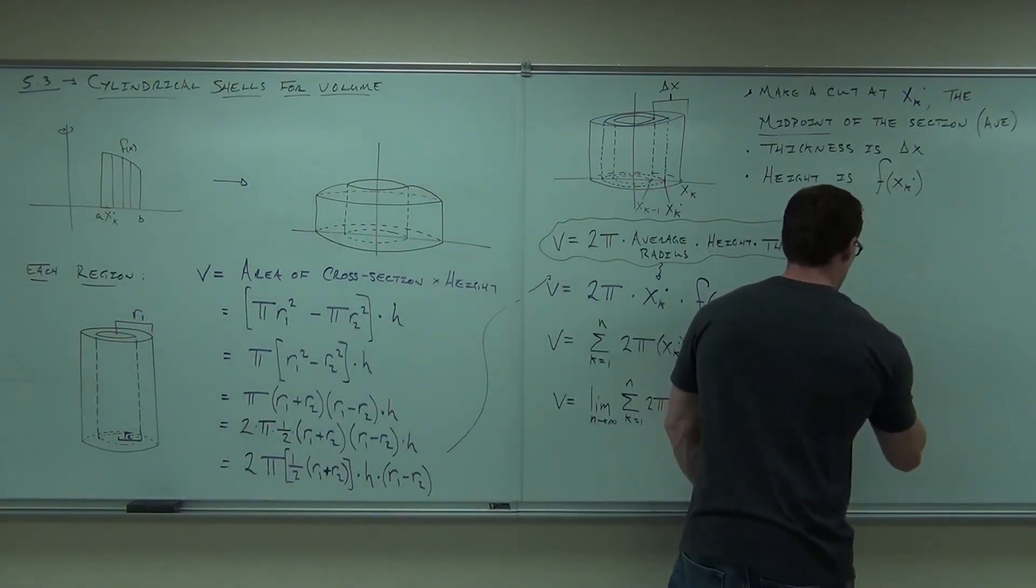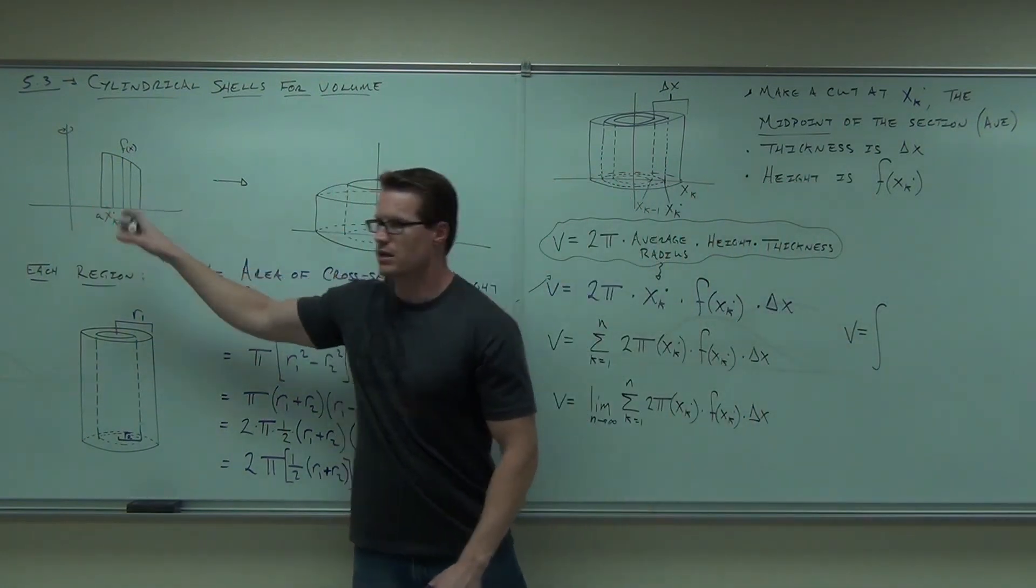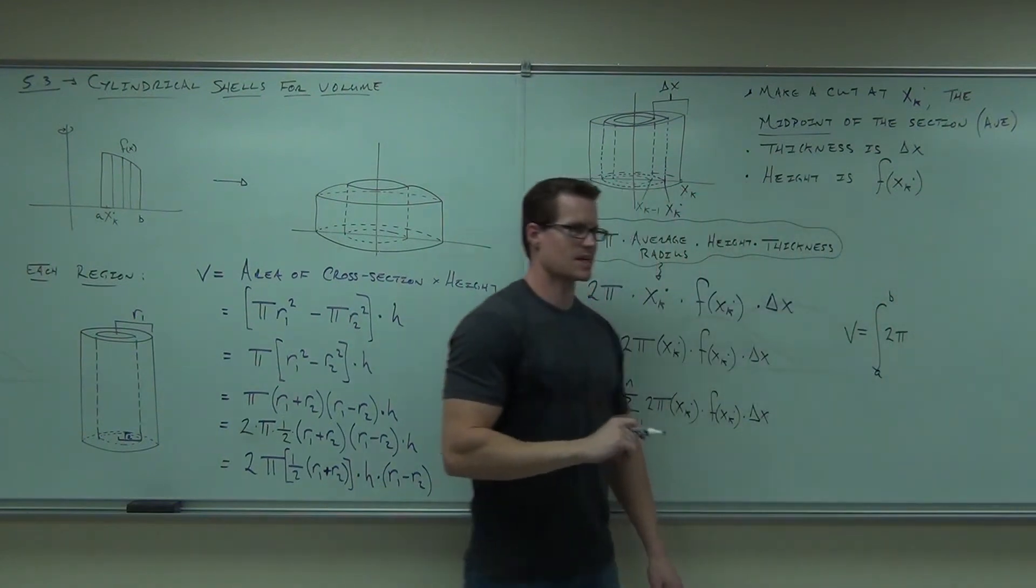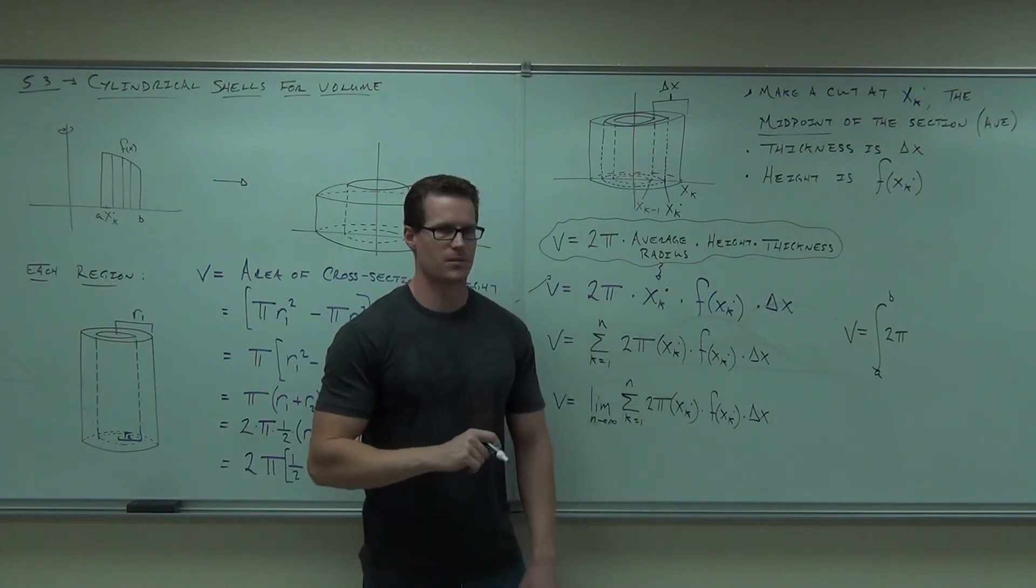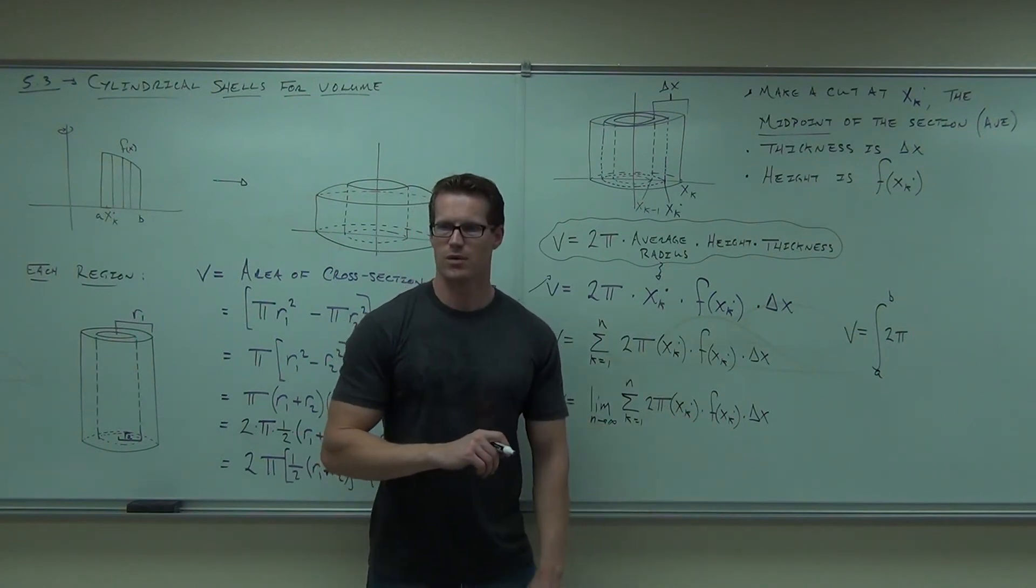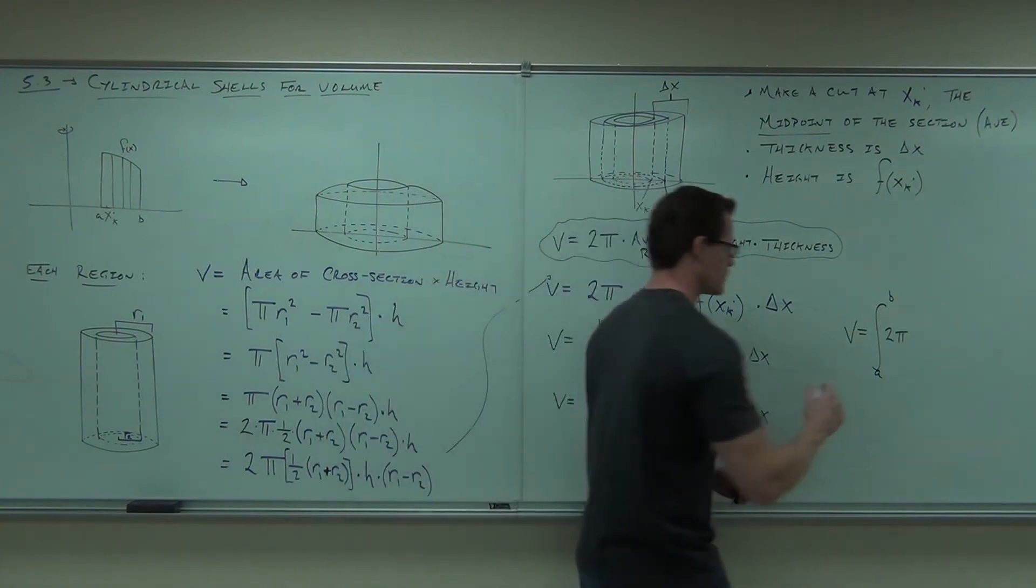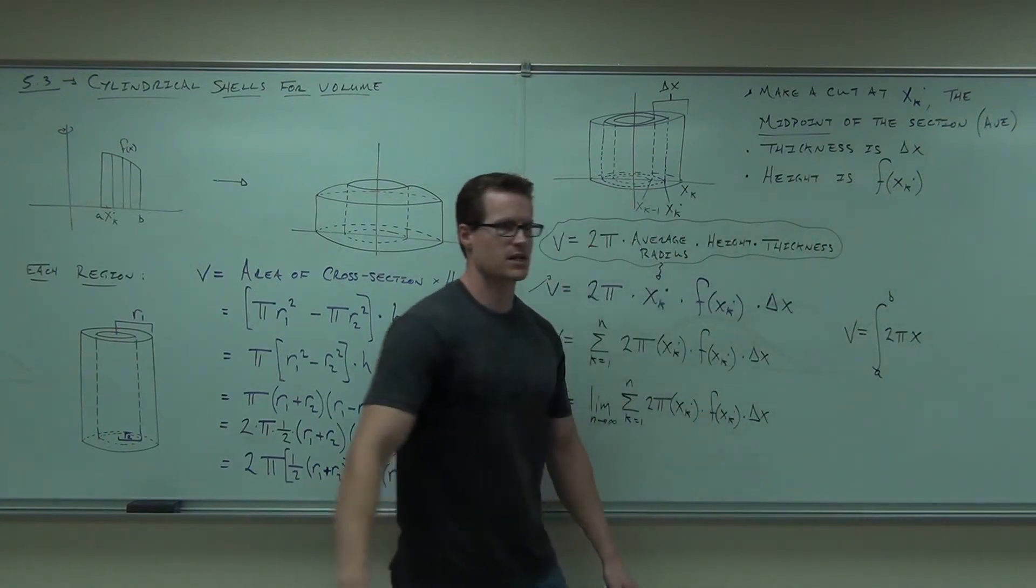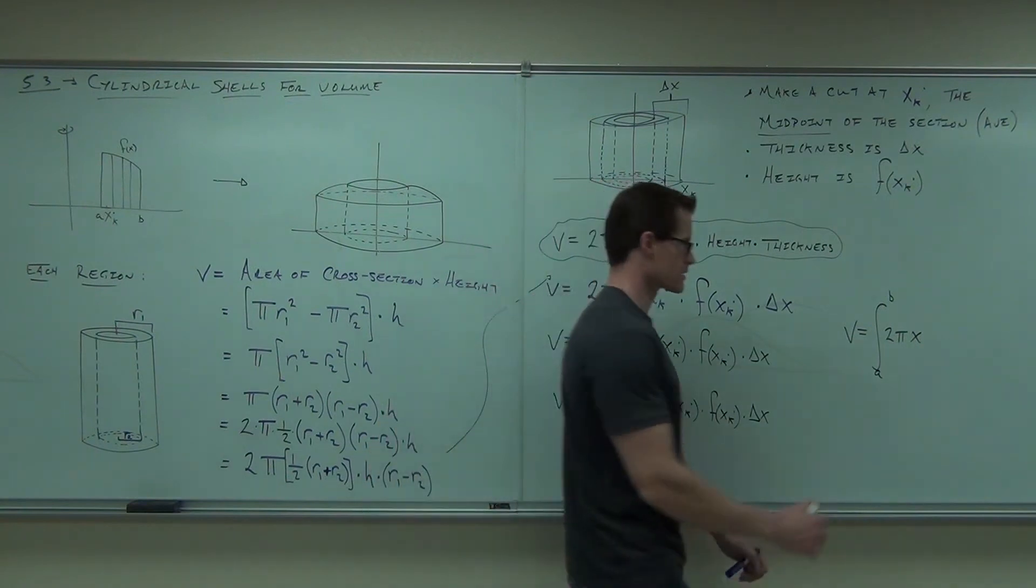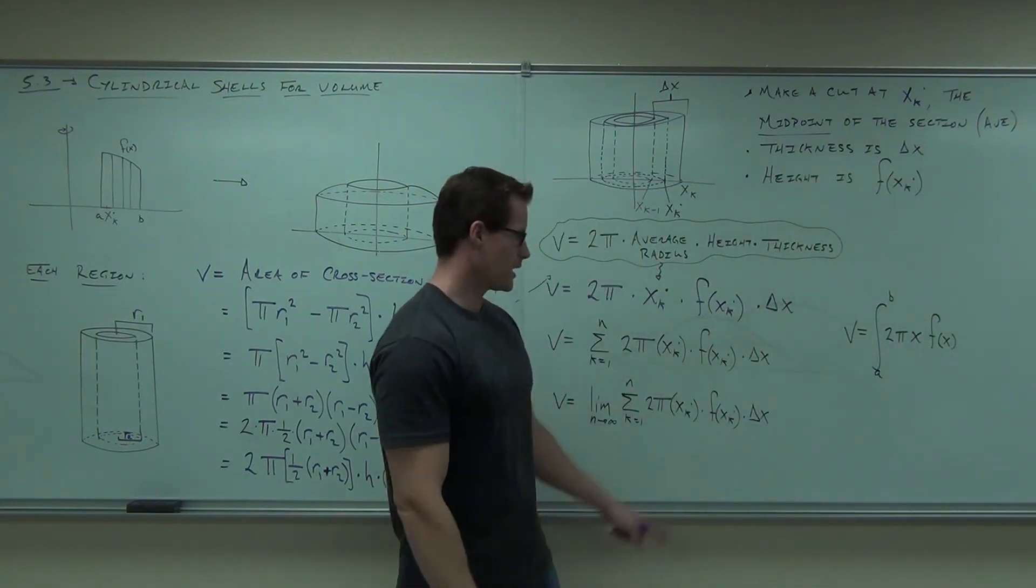So we have volume is an integral from wherever our interval starts a to b. 2 pi. What happens to x_k dots when I take limits? What do they become? Random arbitrary points become actually just a representation for all x's. X. So f of x_k dot becomes f of x. And what do delta x's become? dx.